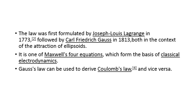Gauss law can be used to derive Coulomb's law, and using Coulomb's law you can derive Gauss law — so both can be derived from each other. The question is which one is more convenient to use. If you are having a large number of particles, then Gauss law is more convenient. But if you have only one or two particles, then Coulomb's law can be used.